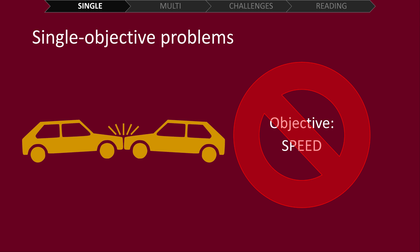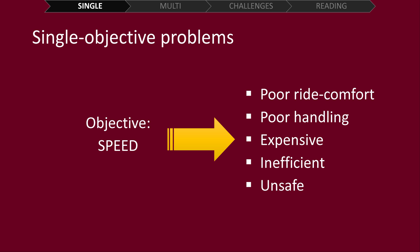However, in the real world, we know that designing a vehicle with the single objective of getting the fastest speed possible is not a good idea. This is because, whilst the vehicle may be extremely fast, it would likely have poor ride comfort, have poor handling, be expensive, be fuel inefficient, be extremely unsafe, and so on.